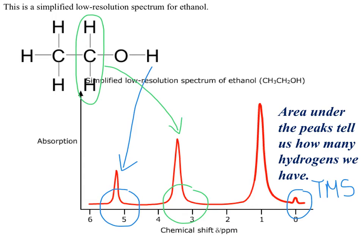That only leaves the three chemically equivalent yellow hydrogens. They are as far as possible in the molecule of ethanol from the electronegative oxygen. So they are responsible for causing the peak at a chemical shift of 1 part per million. By looking at the chemical shifts and the environment of the hydrogen atoms in the molecule, I can decide which hydrogens have caused which peak.